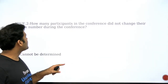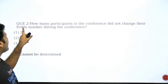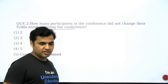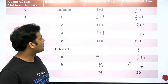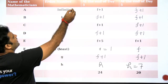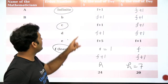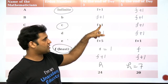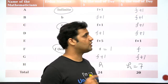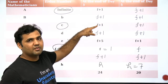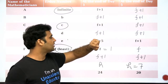Look at question number 2. The question is asking: how many participants in the conference did not change their Erdos number during the conference? Kitne aise participants hain jinka Erdos number change nahi hua. On the third day of the conference, A, C, and F had co-authorship, jiski wajah se A aur C ko F+1 ka Erdos number mila. So A ka Erdos number change ho raha hai, C ka Erdos number bhi change ho raha hai — they are not in that category.